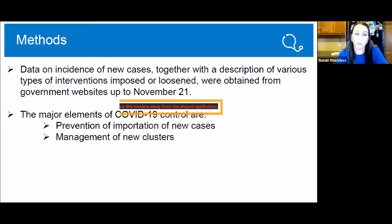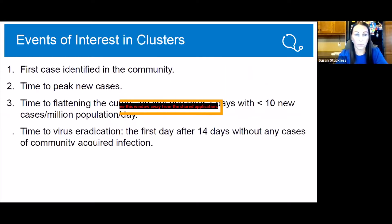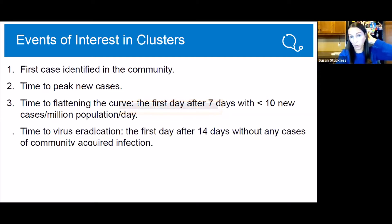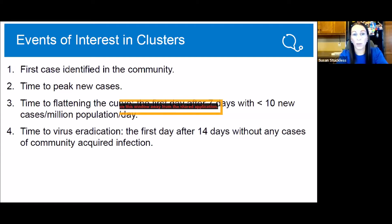Basically, there are two major elements that we've learned for COVID-19 control. One is the prevention of importation of new cases and the management of new clusters. Within those clusters, the events of interest that we identified would be: when the first case was identified in the community, time to peak of new cases, time to flattening the curve — classified as the first day after seven days without or with less than 10 new cases per million population per day — and also time to virus eradication, which would be 14 days without any new cases of community-acquired infection.